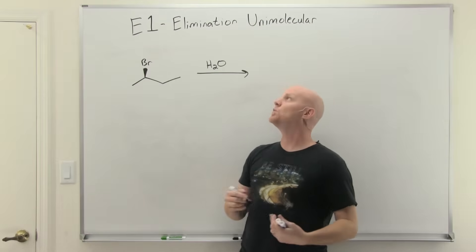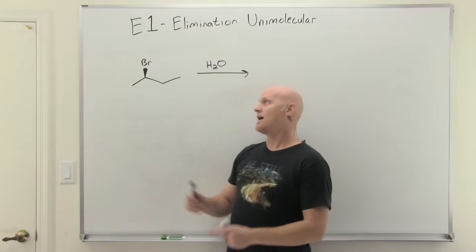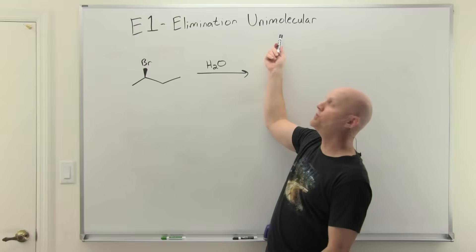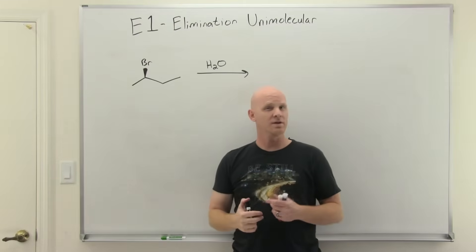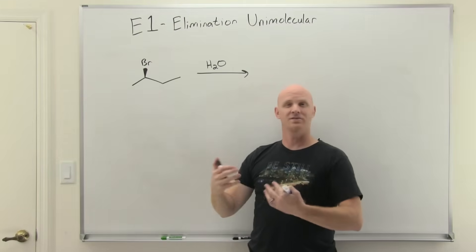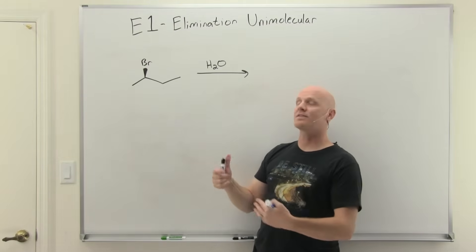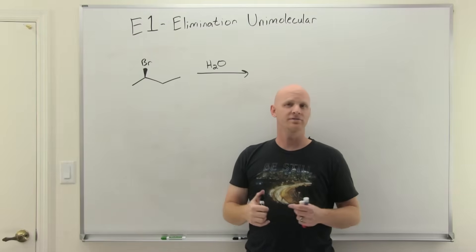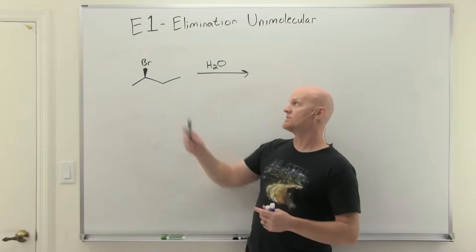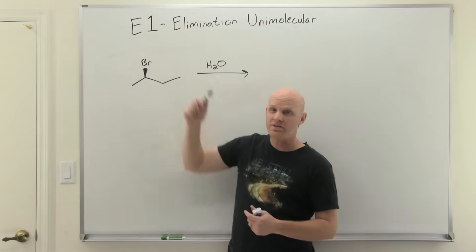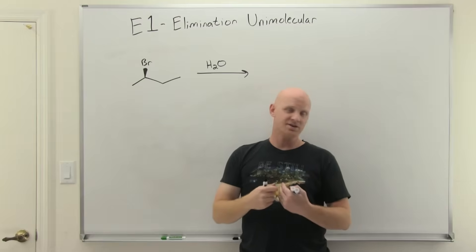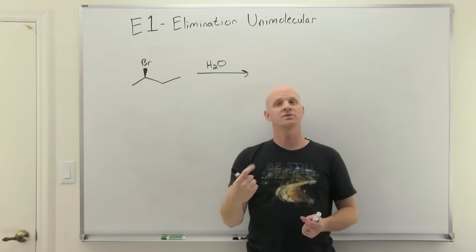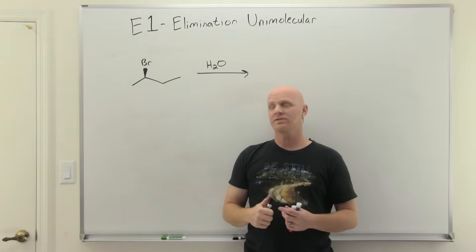E1 elimination reactions — E1 stands for elimination unimolecular. As you recall from SN1, this is a kinetics thing and deals with the fact that there's just one reactant molecule involved in the rate-determining step. It has nothing to do with the number of steps — E1 reactions always have more than one step, but again it's how many reactants are involved in the rate-determining step.